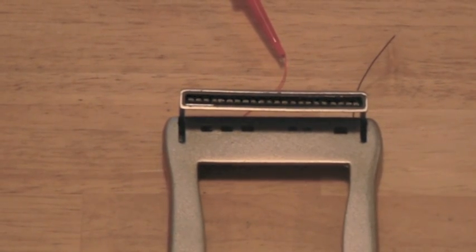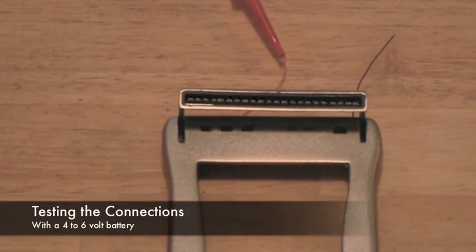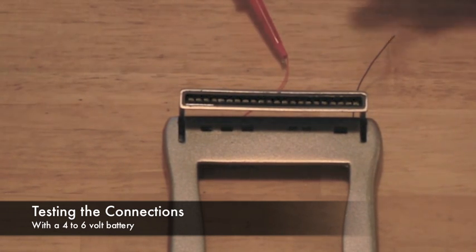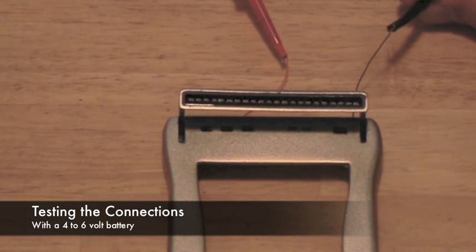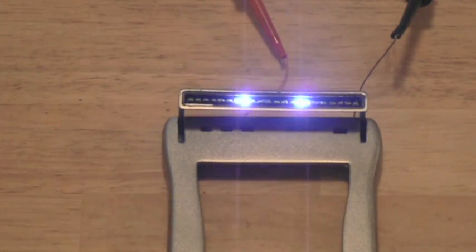To be absolutely positive the new connections are good, connect a 4-6 volt power source to the leads. If the display begins to run, then you are good to go.